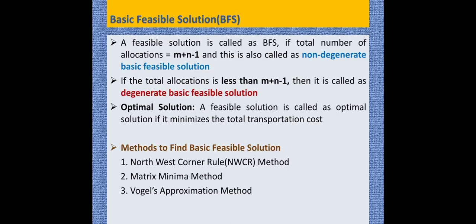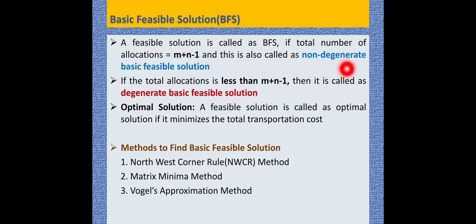Basic Feasible Solution, also referred to as BFS, is a feasible solution where the total number of allocations is equal to m plus n minus 1, that is, number of supply plus number of demand minus 1. This is called a non-degenerate basic feasible solution. If the total allocations is less than m plus n minus 1, then it is called a degenerate basic feasible solution.